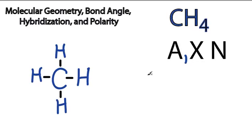X are the atoms bonded to the atom of interest, the carbon. So we have one, two, three, four, where these lines represent the chemical bond. So we'll put a four right here.